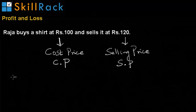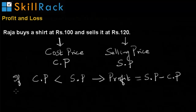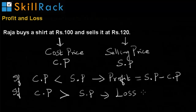Based on the cost price and selling price, we can infer whether it is a profit or a loss. If cost price is less than selling price, then it is a profit or gain. The profit is given by the formula: selling price minus cost price. If cost price is greater than selling price, then it is a loss. The loss is calculated using the formula: cost price minus selling price.